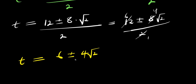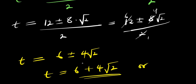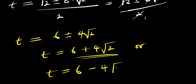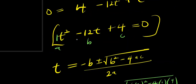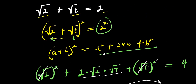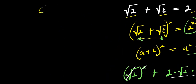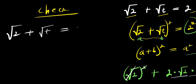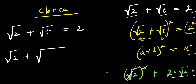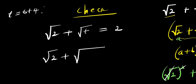So we have two values for t: t equals 6 plus 4 root 2, or t equals 6 minus 4 root 2. Now, what we are going to do is check using these two values and find out if both values satisfy the equation, or if only one value satisfies it.